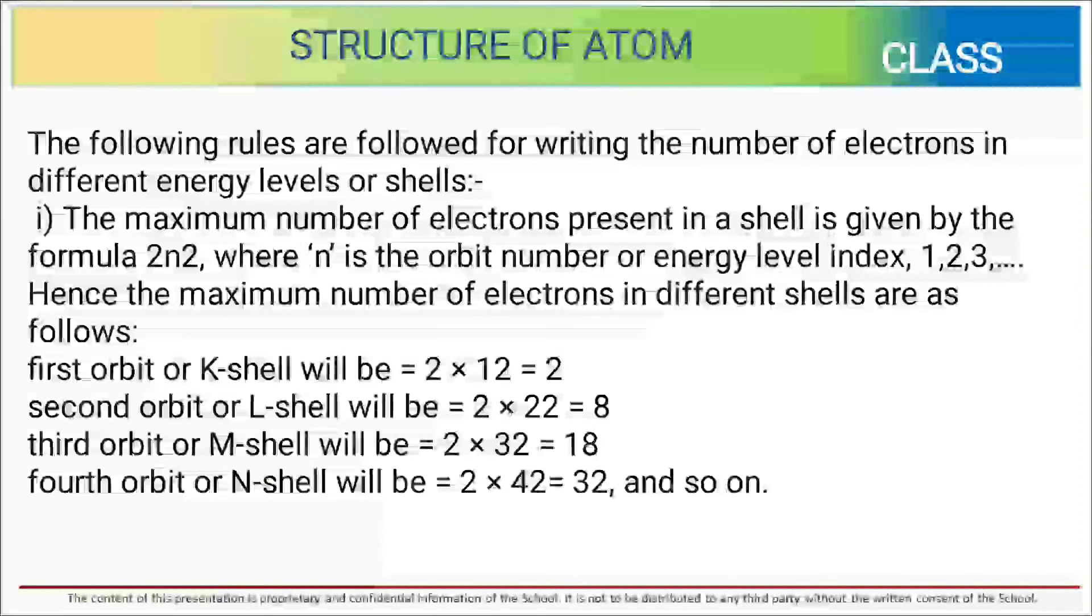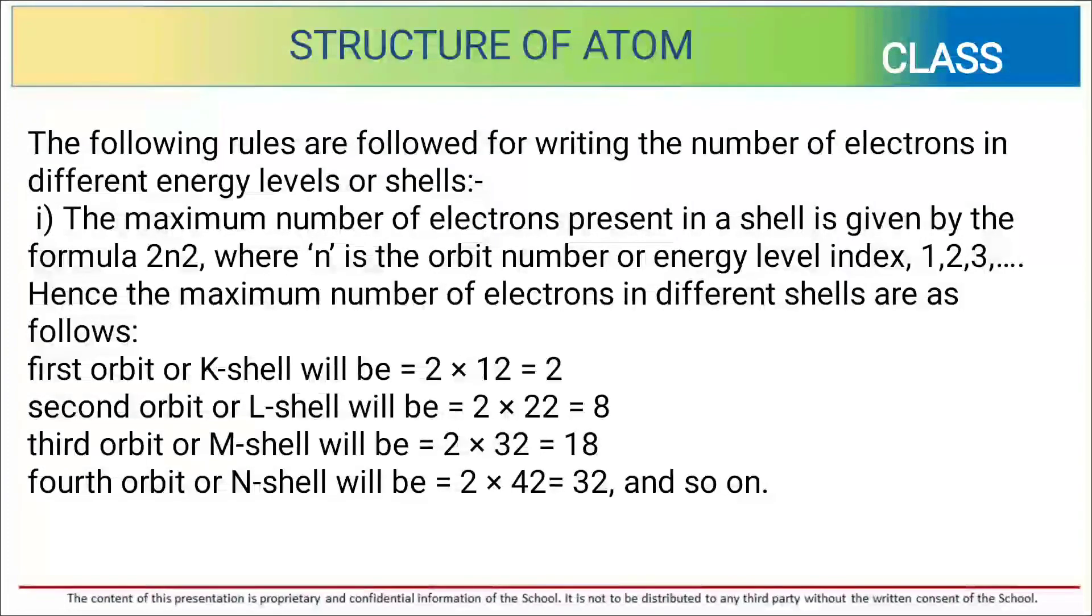The following rules are followed for writing the number of electrons in different energy levels or shells. The maximum number of electrons present in a shell is given by formula 2n². So in this way we can get systematic distribution: K shell is 2, L is 8, M is 18, and N is 32.